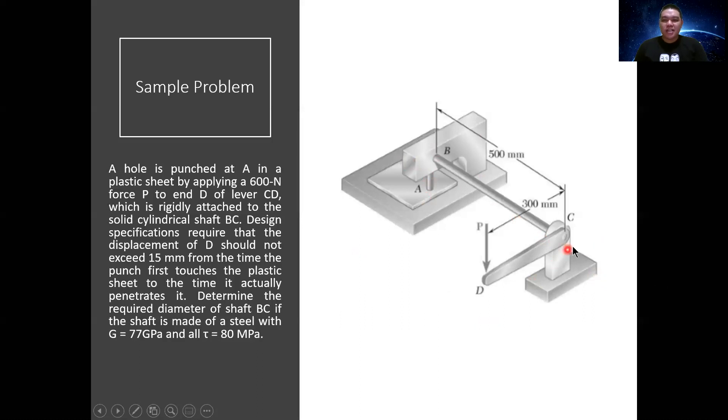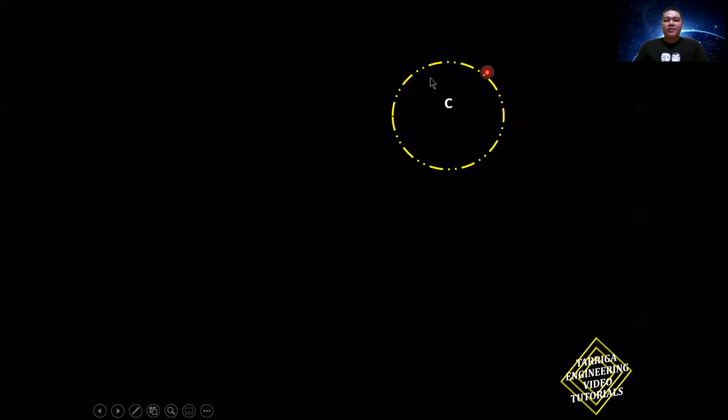Let's isolate point C and D, the lever. This is the shaft in front view, shaft BC. It has a radius of the shaft BC. And this is the lever CD. At point D, there's P equal to 600 newton. And the 300 mm is the length of the lever, which will serve as the eccentricity of the force with respect to the center of the shaft BC. By that, we can calculate the torsion, which is basically force times the perpendicular distance.